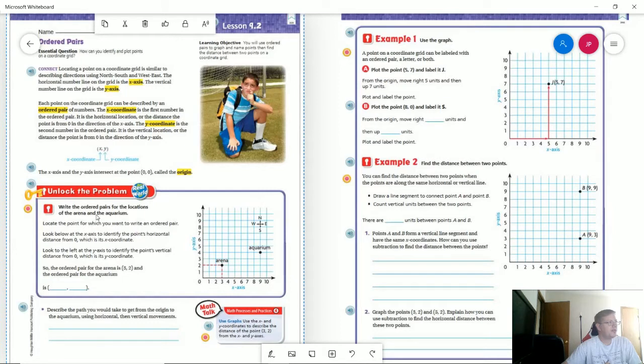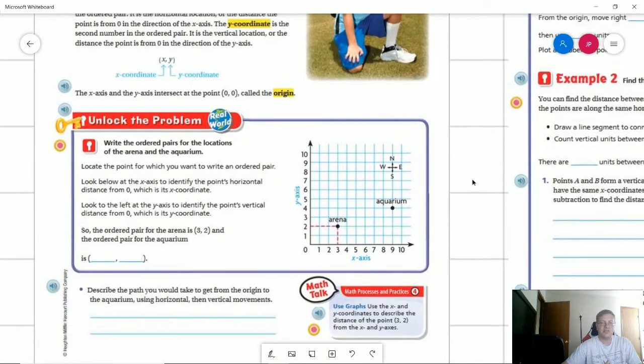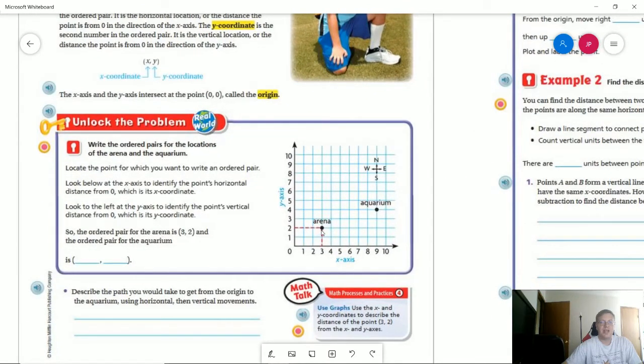Let's go ahead and take a look at our unlock the problem. They want us to write the ordered pairs for the locations of the arena and the aquarium. I'm going to try to zoom in a little bit and make this the focus on the screen here. So right here is our arena. We would start by counting over three spots and then counting up two. And that's going to give us three, two for the ordered pair. For the aquarium, I want you to go ahead and try this along with me. Pause the video if you need to. We're going to count over one, two, three, four, five, six, seven, eight, nine. So our first number is going to be nine. And then we are going to count up. And that's going to give us one, two, three, four. So for the aquarium, our ordered pair would be nine, four. So the x value is nine, y value is four.